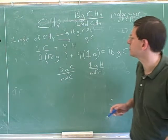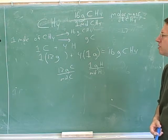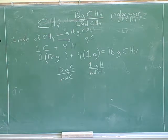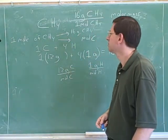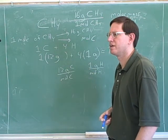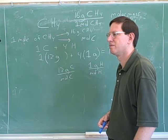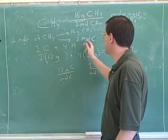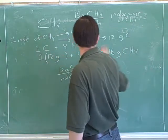There's a simpler way to do this. If you have one mole of methane, how many moles of carbon do you have? One — every one methane has one carbon, so one mole of methane would have one mole of carbon. Therefore, one mole of methane has 12 grams of carbon.